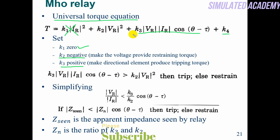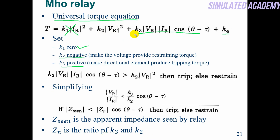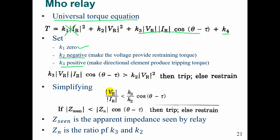So k2 will be the restraining torque while k3 will be the operating torque. k3 will cause the relay to operate. If the pickup flux is exceeded, the relay will operate. So if k3 × Vr × Ir × cos(θ − τ), where θ is the angle between voltage and current and τ is the minimum torque angle, is greater than k2 × V², it will trip; otherwise it will restrain. Simplifying, Vr/Ir < (k3/k2) × cos(θ − τ). If this condition is met, the relay will trip.